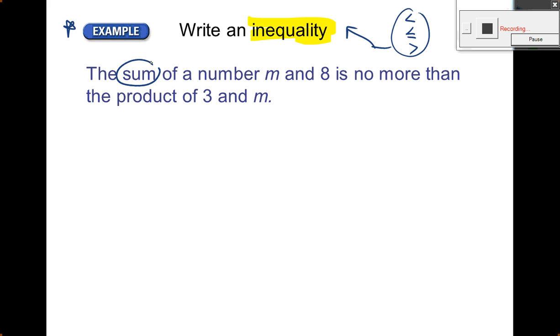Sum. I heard sum. Good. What else? The number M. Good. What's that going to be? That's our variable. Good. No more than. The product. Good. Product is important. Right? What's product mean? Multiply. And then we have 3 and M here. And then 8 of M and 8.